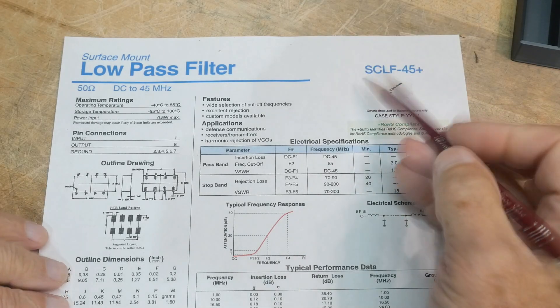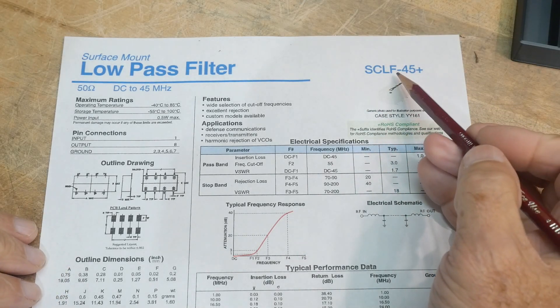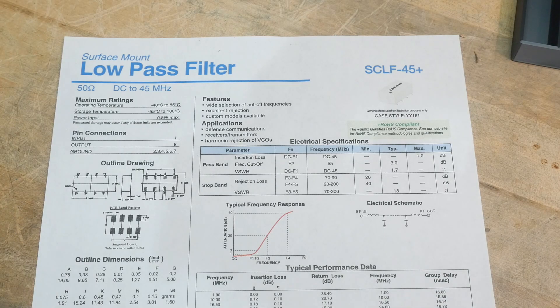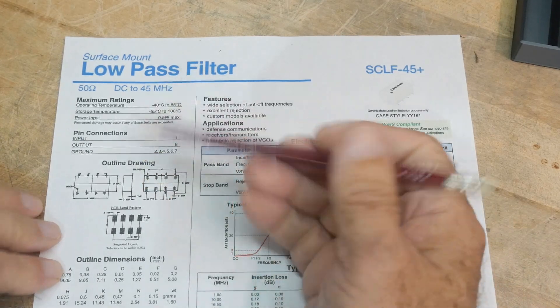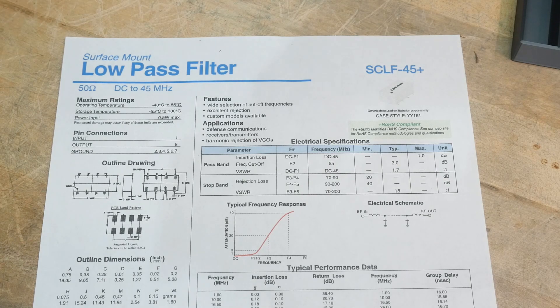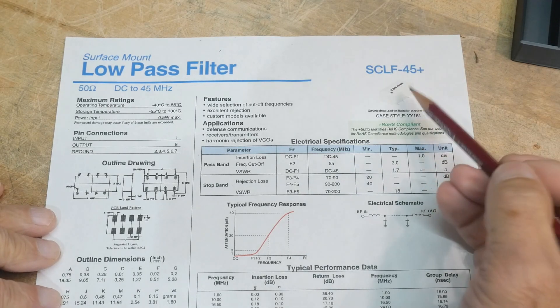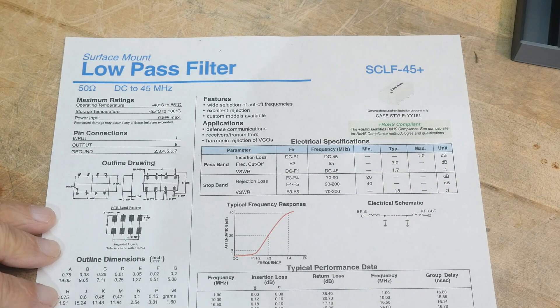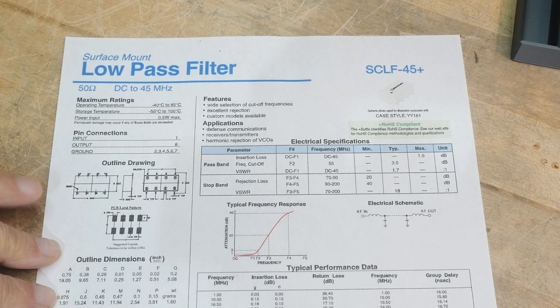All right, chip of the day. This one is an SCLF-45, and it is a low-pass filter. So, not exactly a chip, sort of a module, but I'll call it a chip. You solder it down just like a chip. It's got eight legs on it, so we'll call it a chip.